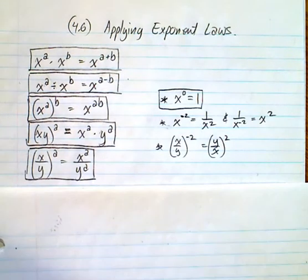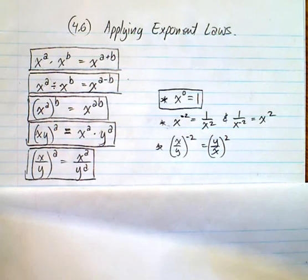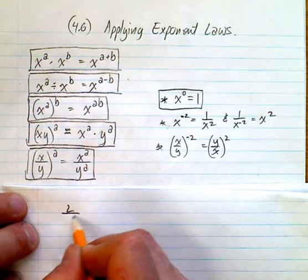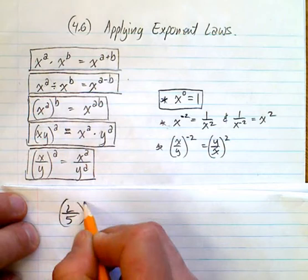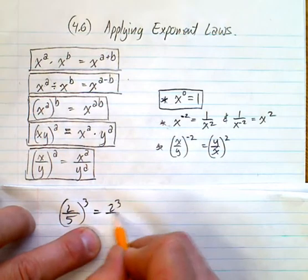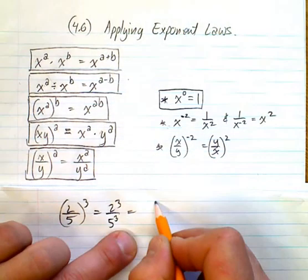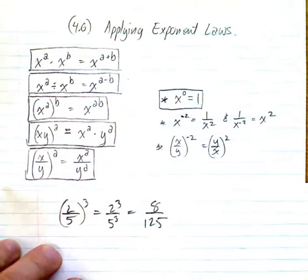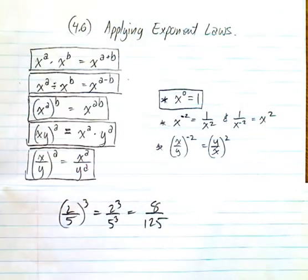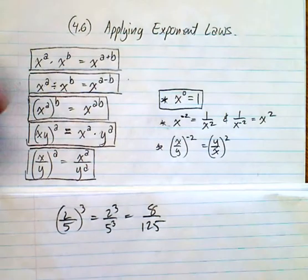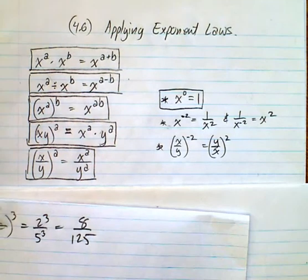Similarly with fractions: if I have 2 over 5 all to the power of 3, that's 2 to the power of 3 over 5 to the power of 3, which is 8 over 125. Negative exponents we just dealt with in the previous section, so please have a look at those.